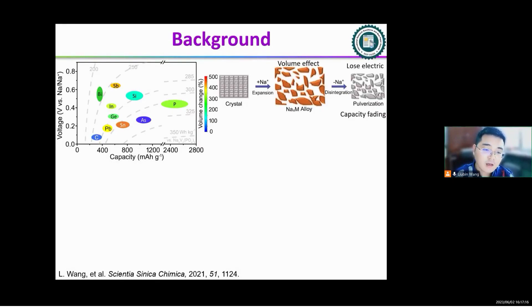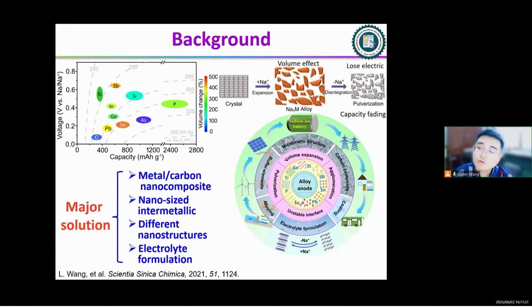There are four main solutions to solve these problems. First one, construct metal carbon nanocomposite or prepare nano-sized intermetallic materials or prepare different nanostructures or through electrolyte formulation to buffer the volume change during cycling and accommodating strain ensuring a good electrochemical performance.